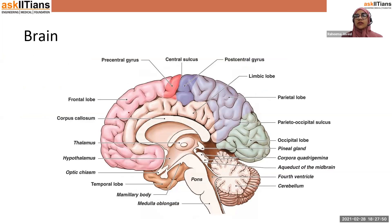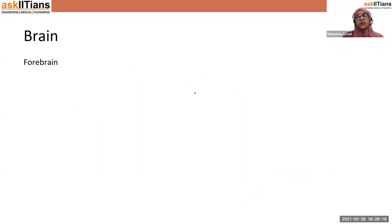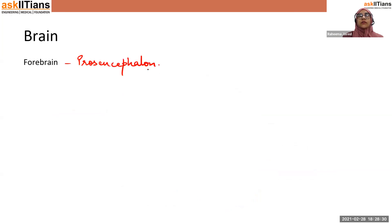Here you can see the cerebrum. This is one cerebral hemisphere, and the corpus callosum connects the left cerebral hemisphere with the right cerebral hemisphere. You can see the folds and the depressions — this whole part is the cerebrum. Now let's start with the first part of the brain, which is the forebrain, also known as prosencephalon.